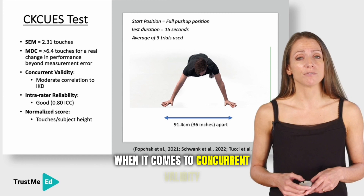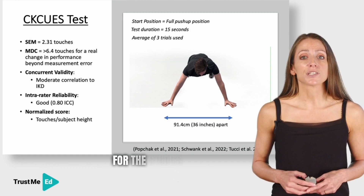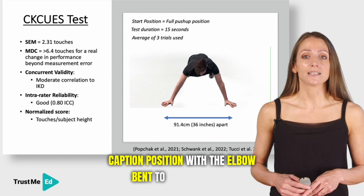When it comes to concurrent validity — how a new test compares against a validated test — this particular test has a moderate correlation to isokinetic dynamometry (IKD) assessment. For the studies that looked at this test, all measures were for internal and external rotation, performed at 60 and 180 degrees per second in the 45-degree scaption position with the elbow bent to 90 degrees of flexion.